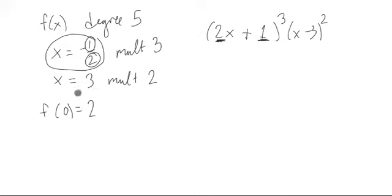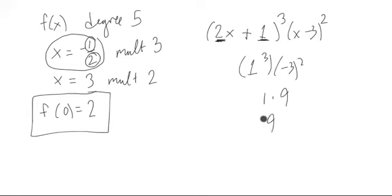We need to rectify this situation right here. When we plug in 0 right now to what we have, it's kind of like this part and this part going away, and just having left with 1 cubed times negative 3 squared, which would be like 9 times 1, which would be 9. Well, we need to multiply by something to correct that, so we get 2 in this case.